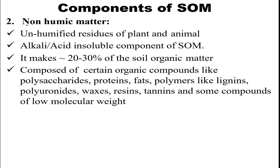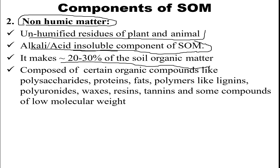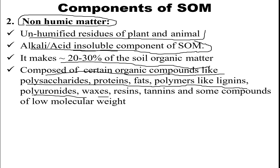The second major component is non-humic matter. Non-humic matter consists of residues of plants and animals and is the alkali-and-acid-insoluble component of SOM, making up about 20 to 30 percent of soil organic matter. It is composed of organic compounds like polysaccharides, proteins, fats, polymer-like lignins, polyuronides, waxes, resins, and tannins, which are of low molecular weight.